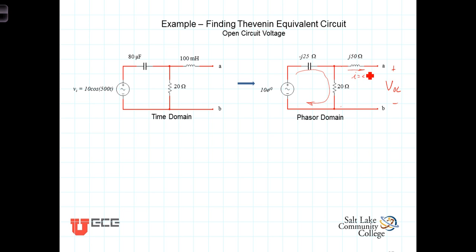Again, because there's no current flowing through that inductor, there will be no voltage drop across that inductor. And the open circuit voltage will just be the voltage across that 20 ohm resistor. The easiest way to get that, it appears to me, would be to use the voltage divider.